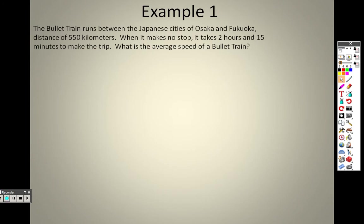So in example 1, the bullet train runs between the Japanese cities of Osaka and Fukuoka, a distance of 450 kilometers. When it makes no stops, it takes 2 hours and 50 minutes to make the trip. What's the average speed? Well, we went over some formulas here already. Since we're talking about speed, we're talking about distance. The D equals RT is what we're talking about.